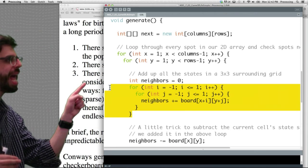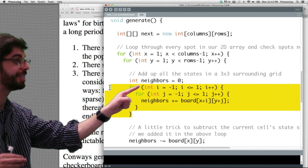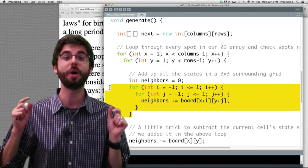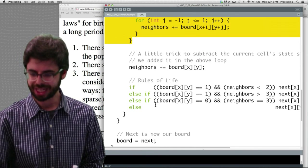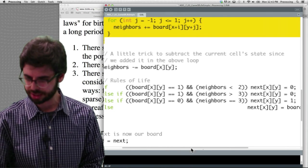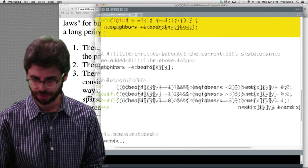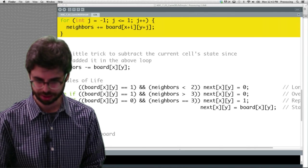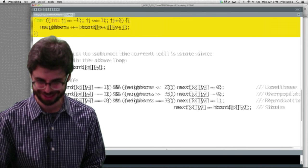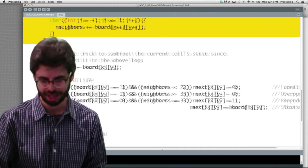And what do we do? We add up, we start with a total number of neighbors at zero, and we add them all together. Once we know the total number of neighbors that are alive, we can then implement our rules.